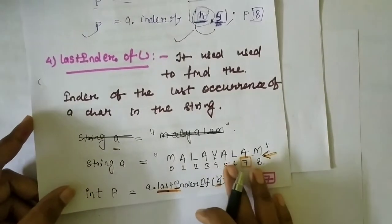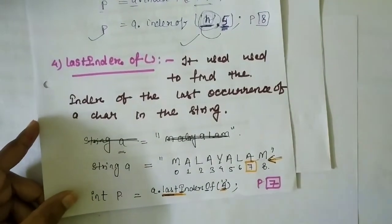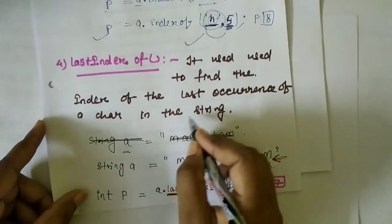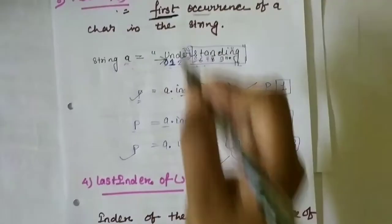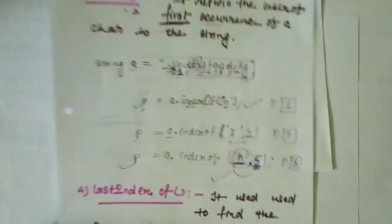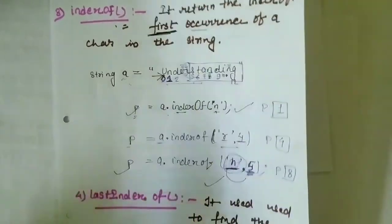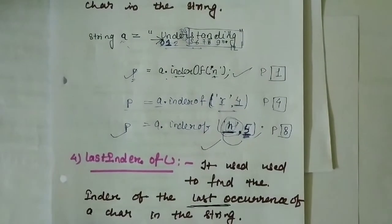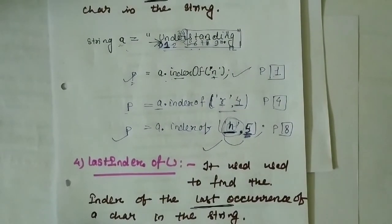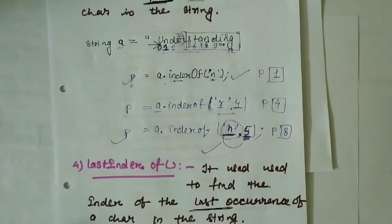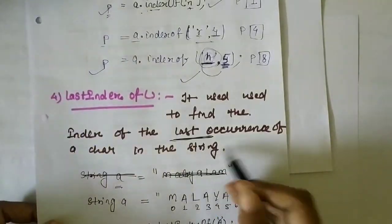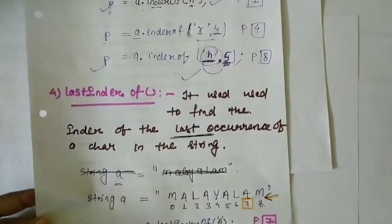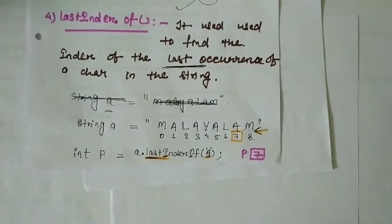Both functions are the same but with one little difference: indexOf finds the first occurrence and lastIndexOf finds the last occurrence. If an exam question asks for the difference, write the definitions of both functions along with examples.